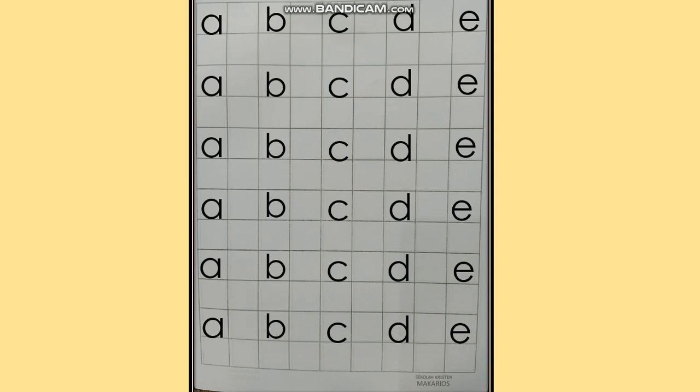What about you children? Have you done writing letter A, B, C, D, E? Sounds E, B, K, D, E.